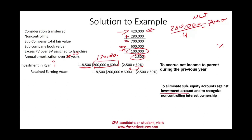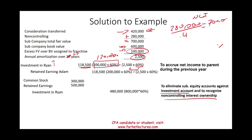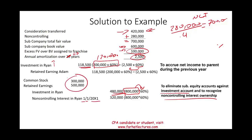Next, we eliminate the subsidiary's equity accounts against the investment and recognize the non-controlling interest. Ryan's equity at the beginning of 20X1 was $800,000 ($300,000 common stock + $500,000 retained earnings). We credit Investment in Ryan $480,000 (which is $800,000 × 60%), and the remaining 40% goes to the non-controlling interest. This entry is made as of January 1, 20X1 when book value was $800,000.